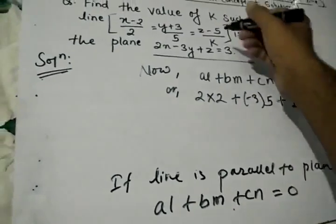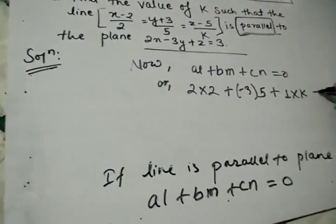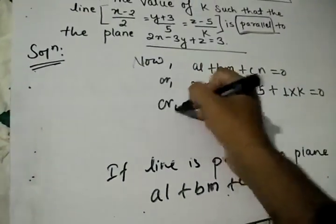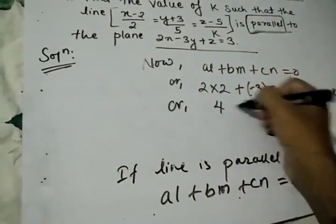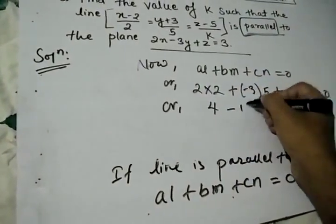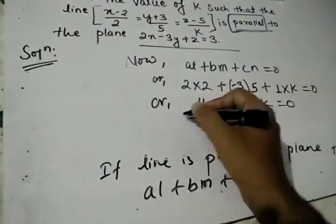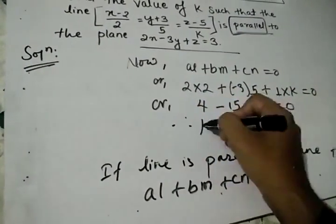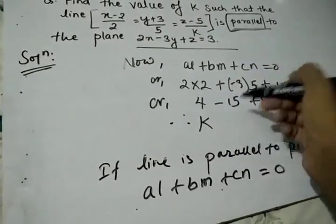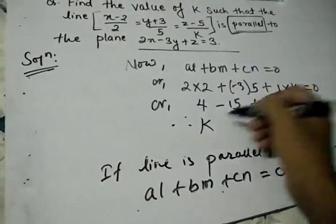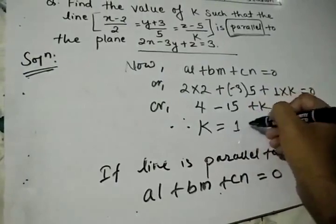Or 2 × 2 + (-3) × 5 + K = 0. Therefore 4 - 15 + K = 0. K = 15 - 4 = 11. So K = 11 is our final answer.